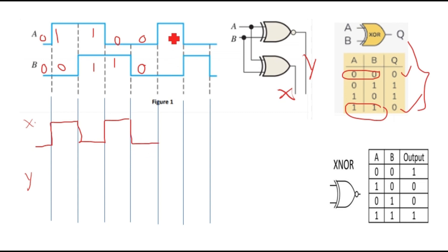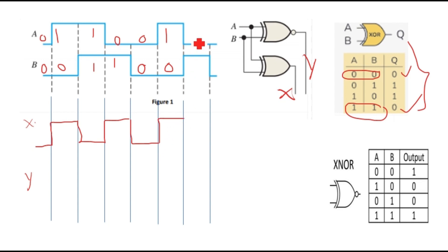A=1 and B=0 gives output 1 because the inputs are different. Then A=0 and B=1 gives output 1 again, and A=0 and B=0 gives output 0. So this completes the output waveform X for the XOR gate.